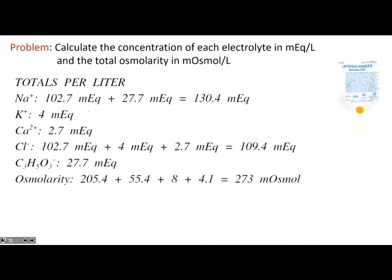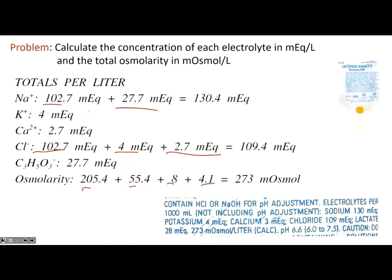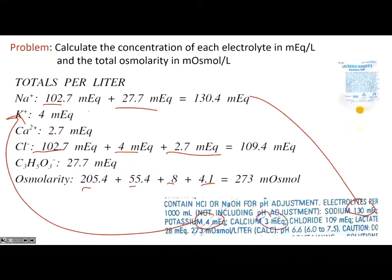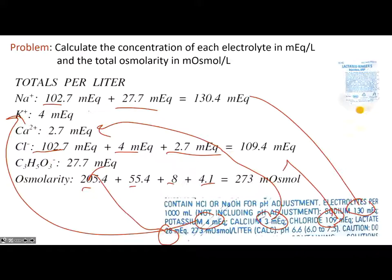Adding up all components: sodium comes from both sodium chloride and sodium lactate; chloride comes from sodium chloride, potassium chloride, and calcium chloride — it doesn't matter which parent molecule it came from. You count up the total milliequivalents of each ion. For osmolarity, add up the milliosmoles from all four ingredients. Verifying against the commercial product label, our values match: sodium, potassium, calcium, chloride, and lactate all confirm. The total osmolarity of 273 milliosmoles per liter is confirmed by the label.